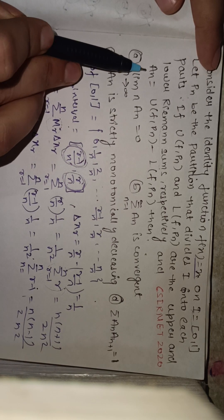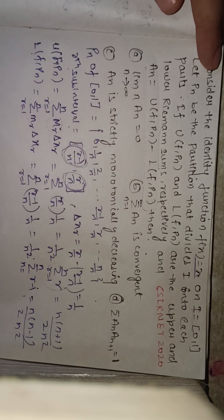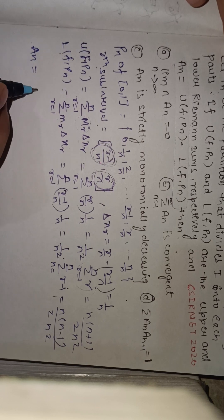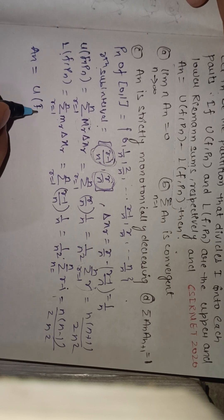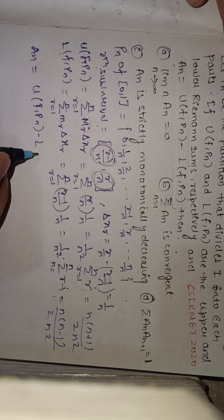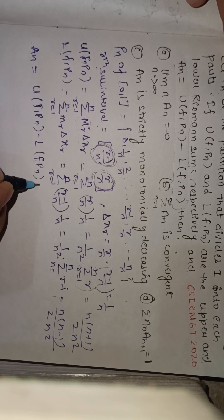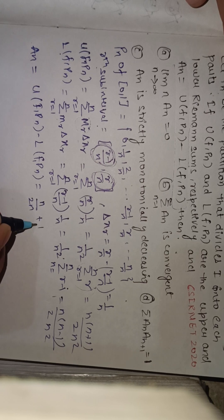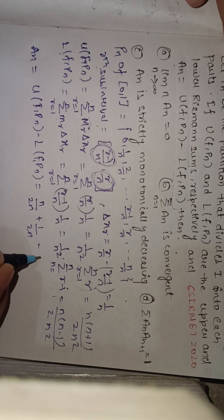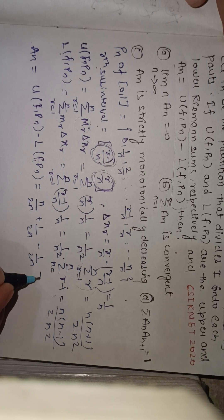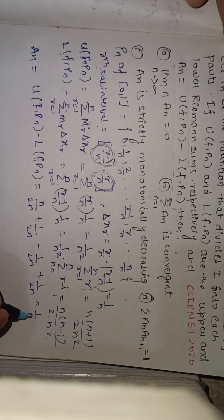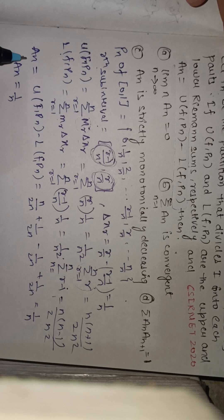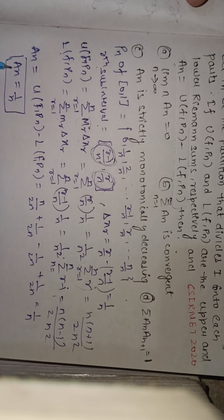Now An is defined as the difference of the upper and lower Riemann sums: An = U(f,Pn) - L(f,Pn) = (n+1)/(2n) - (n-1)/(2n) = 1/n. So An = 1/n.